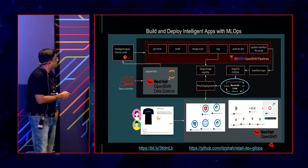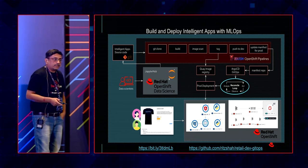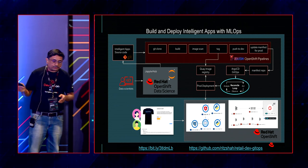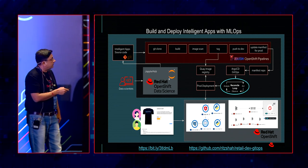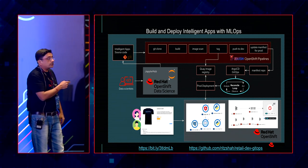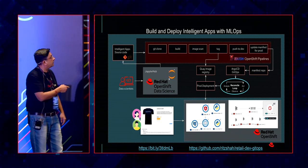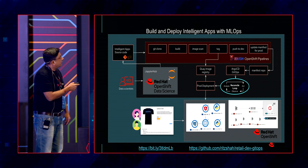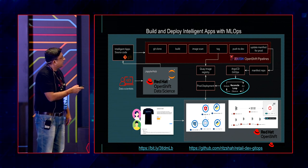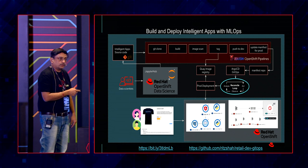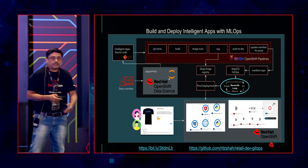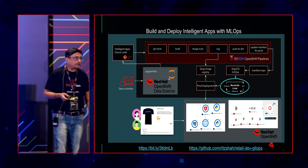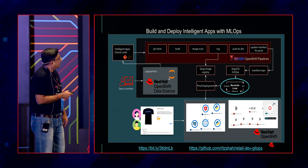This is the whole build-and-deploy intelligent application with MLOps flow. It starts with the data scientist — in JupyterHub notebook — you update and push your code to the Git repository, which triggers the whole pipeline: clone, do checks, build, image scan, tag. It pushes the image to a registry — in our case we use local registry, but you can use Quay registry or JFrog Artifactory. It then gets deployed in production.